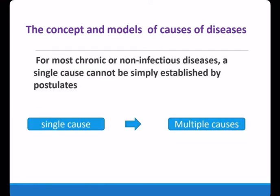However, nowadays, for most diseases, especially non-communicable or chronic disease, causation cannot be established simply by Koch's criteria. Few diseases are so simple that there is a single cause. A given disease can be caused by more than one cause, and every cause involves the joint action of a large multitude of component causes. Later, the theory of multifactorial causes was proposed, associating disease with many factors such as the host, the environment, the behavior, and psychological and social factors.